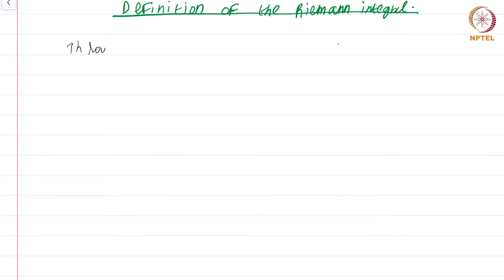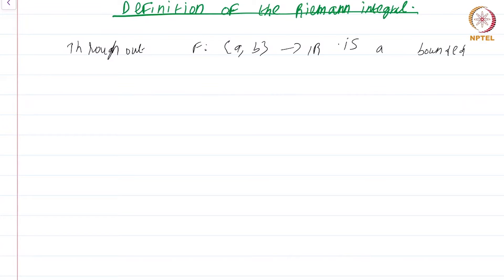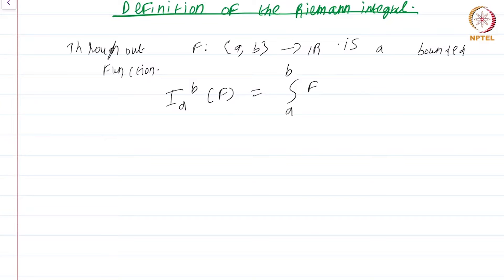Throughout, f from the closed interval [a,b] to ℝ is a bounded function. Our objective is to assign a meaning to I(a,b) of f, or in more common notation, the integral from a to b of f. This is supposed to be the signed area under the graph.